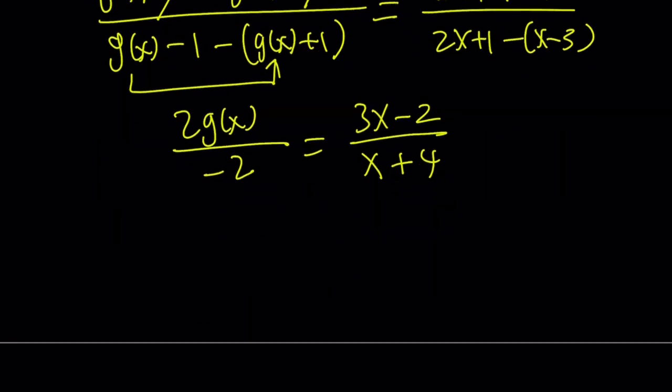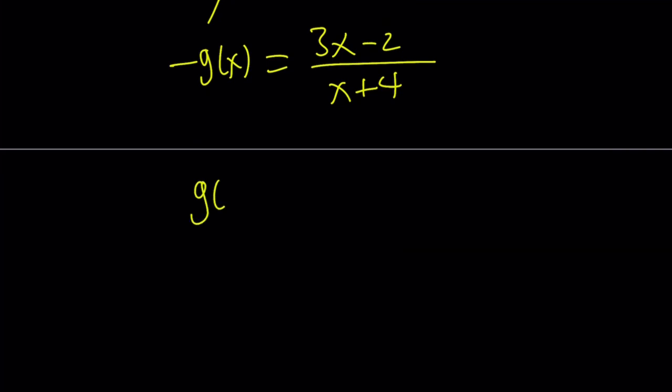This is a little different than what we got because we have a negative sign. We're going to get negative g(x) equals 3x minus 2 divided by x plus 4. And remember, our original answer was different because now we have to negate both sides, meaning that we're going to multiply both sides by negative 1 to get g(x).